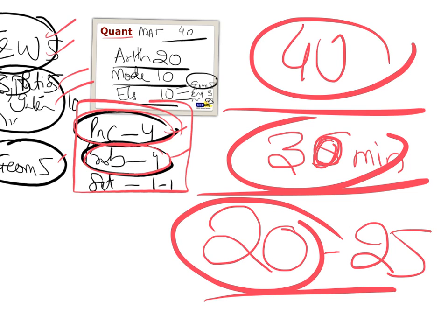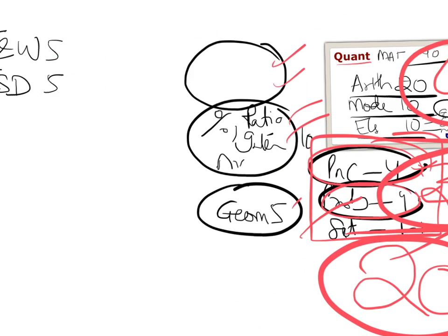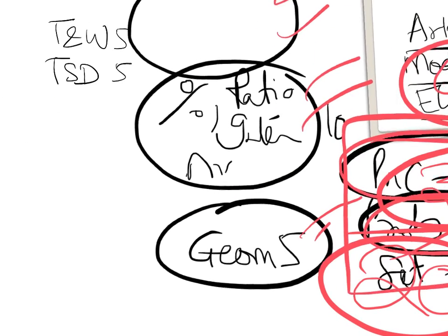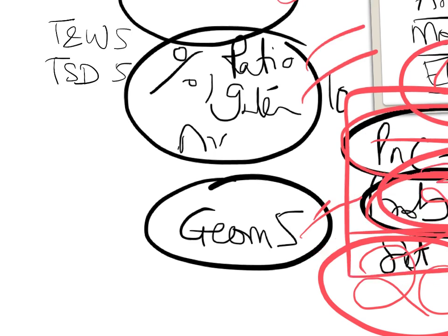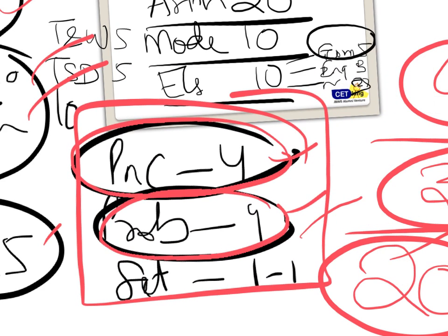If I summarize, main areas to focus on: time and work, time speed distance, ratios, percentage, interest, geometry. If you have time: probability, P&C, set theory. That's your major topics you can't ignore.